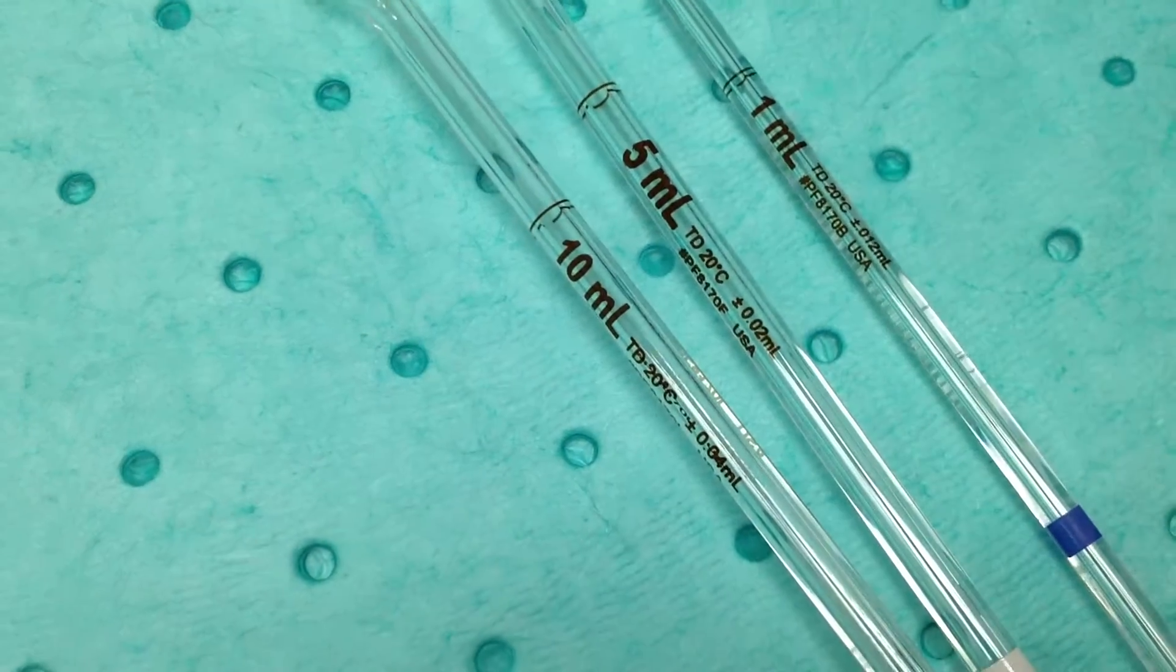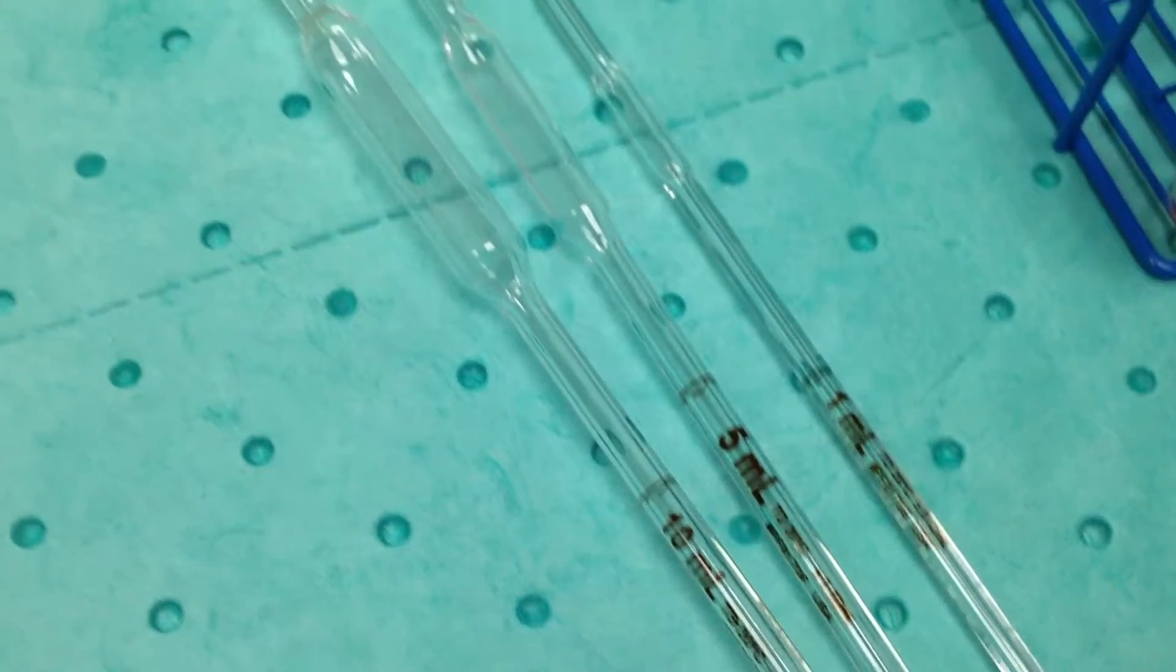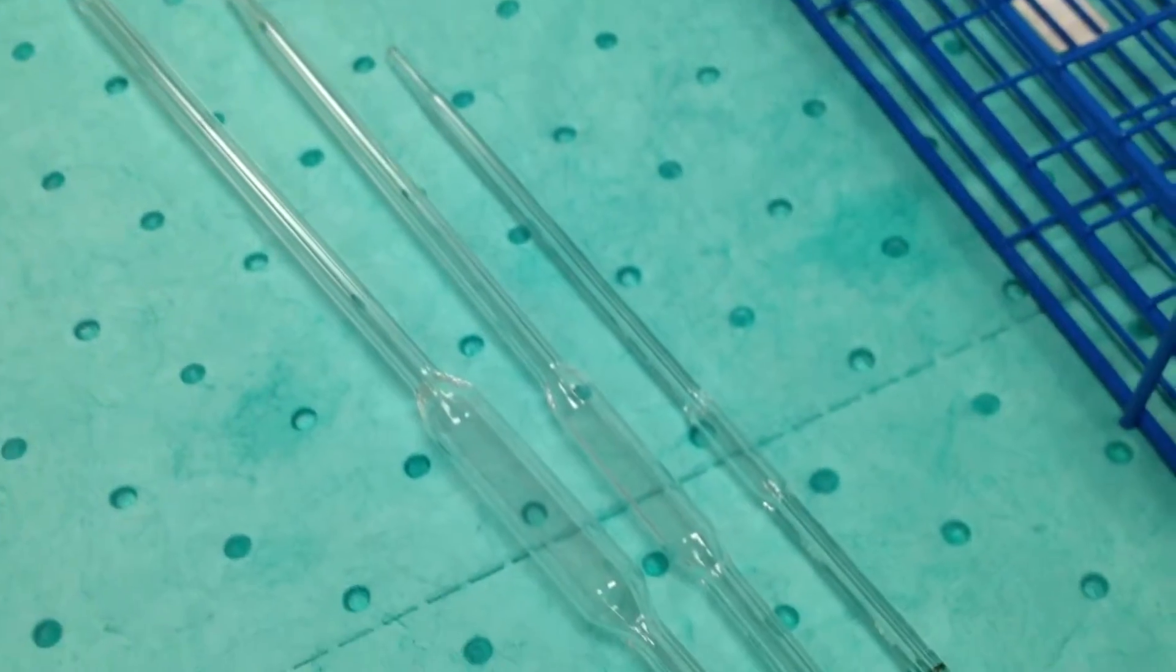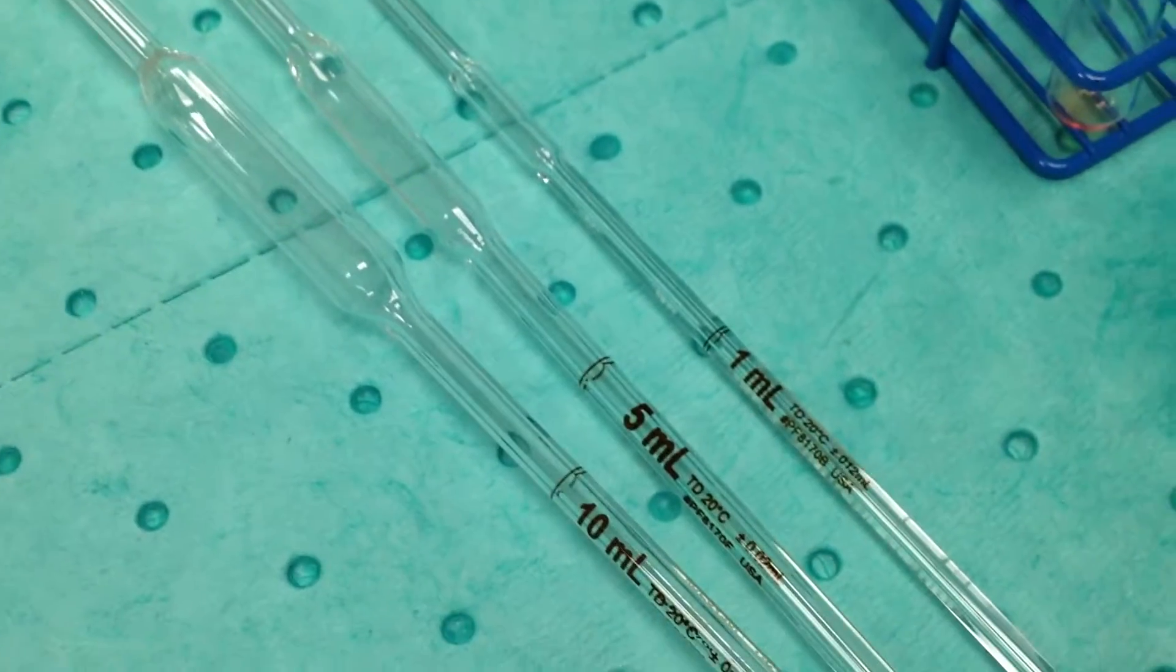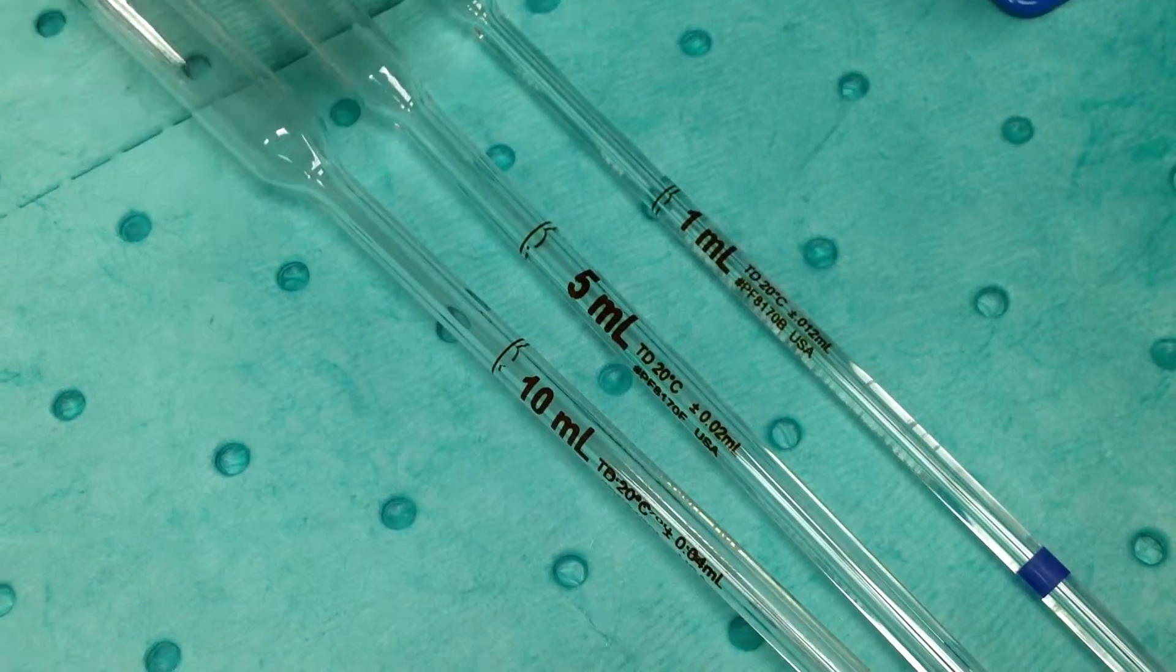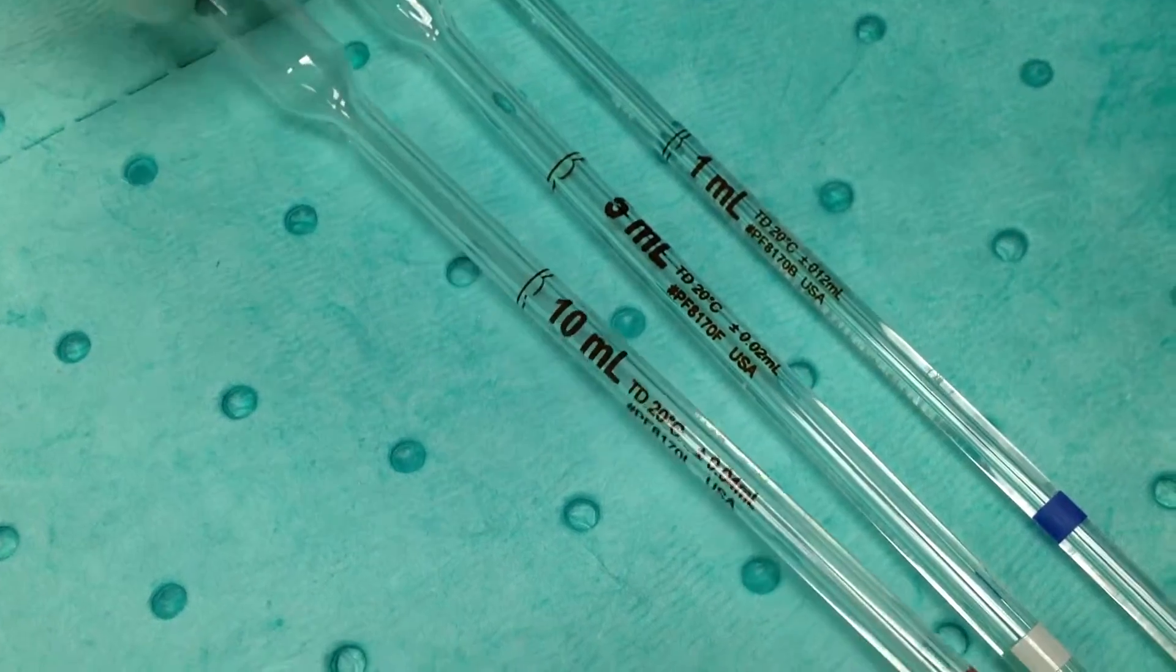Now we're going to use the volumetric pipette. Volumetric pipettes contain only one volume. We are showing a 1 ml, a 5 ml, and a 10 ml.